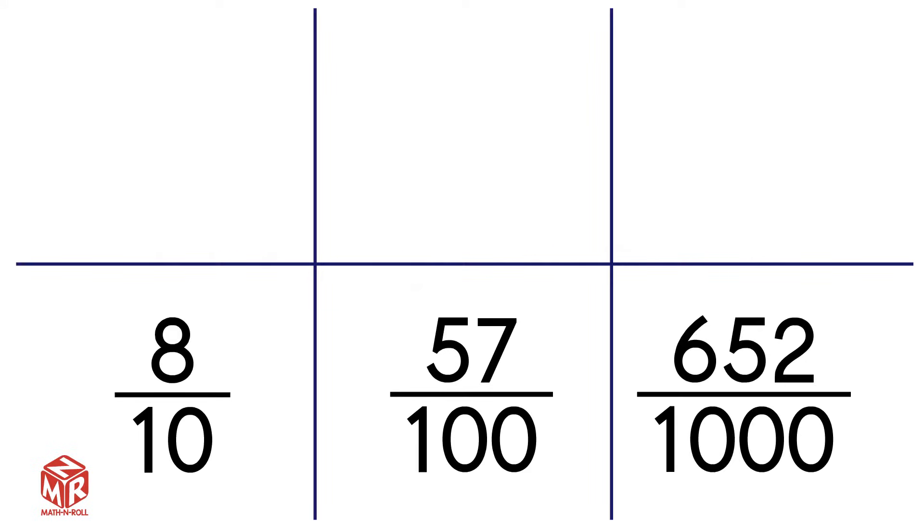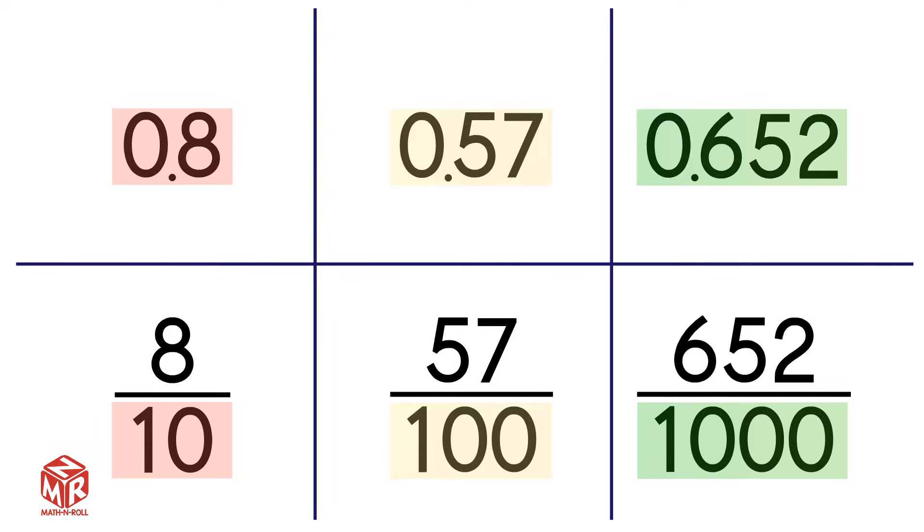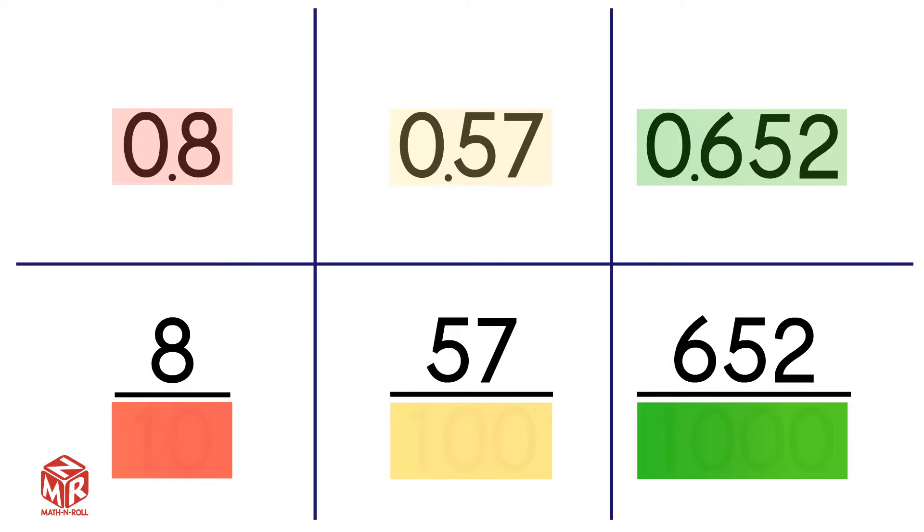In Part 1, we learned how to convert fractions with multiples of 10 in the denominator to decimals. The link to that video will be in the description box below. But what if our fraction doesn't have 10, 100, or 1000 in the denominator? Is there a way to convert it into a decimal?